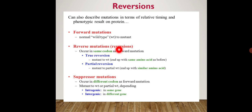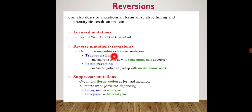There are two types of reversion: true reversion and partial reversion. In true reversion, the mutant is completely converted back into the wild type. In partial reversion, the mutant is converted to only a partial wild type. Both occur in the same codon as the forward mutation — the codon coding for a specific amino acid, which is made up of three nucleotides.